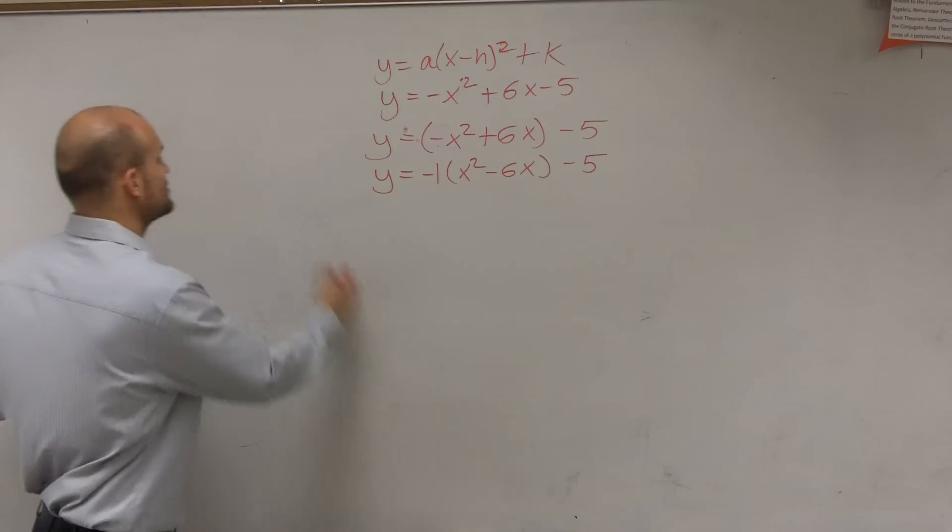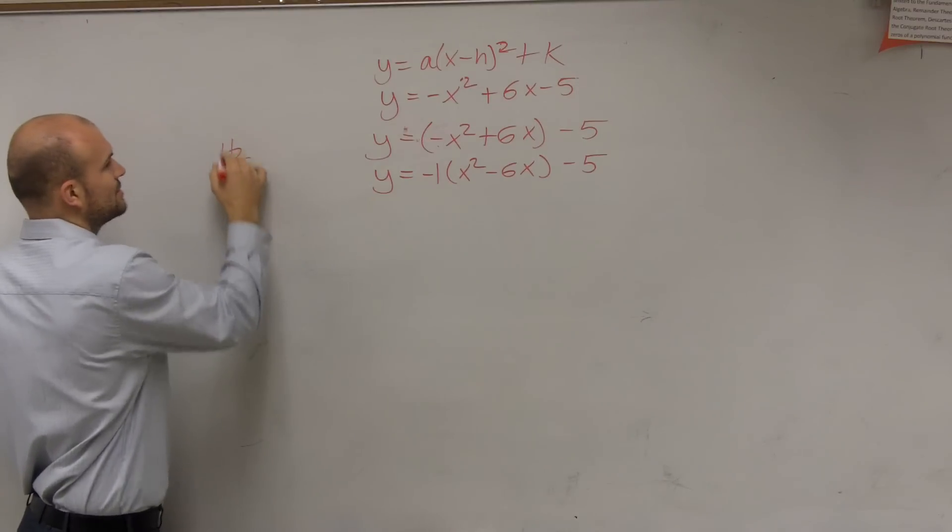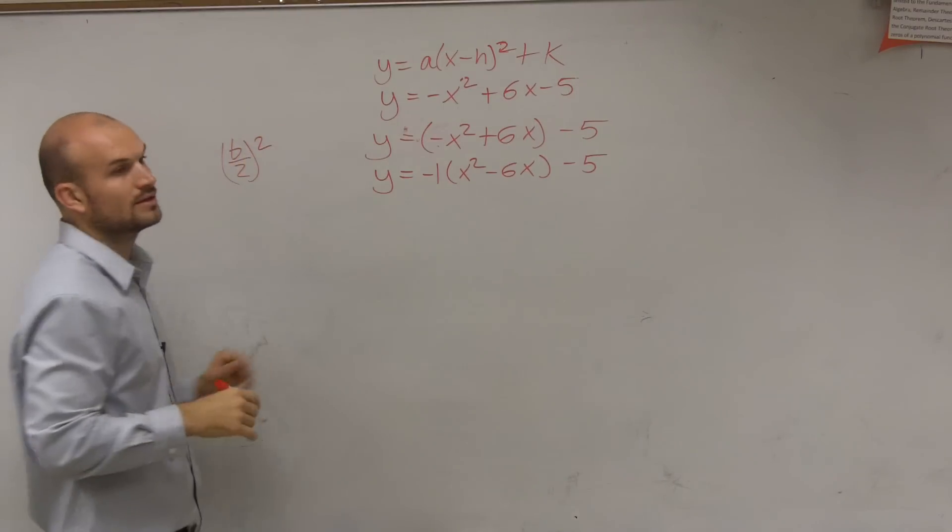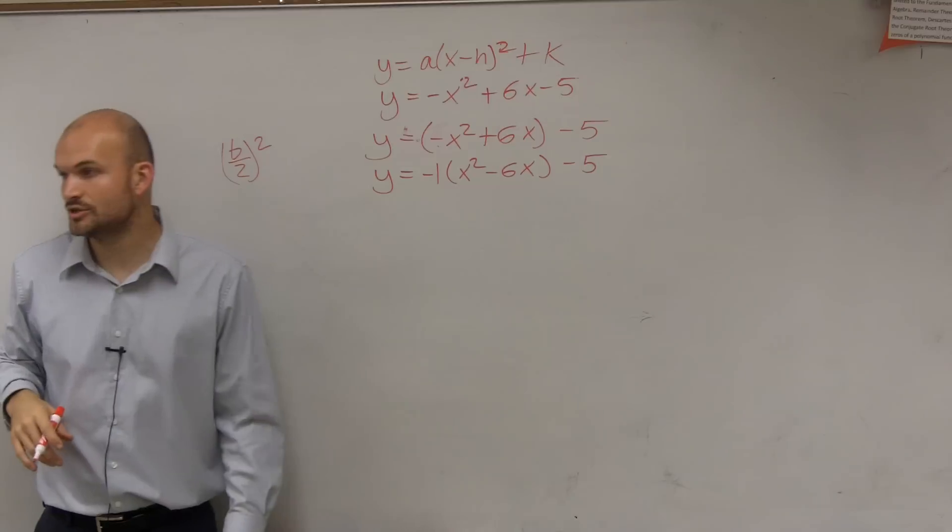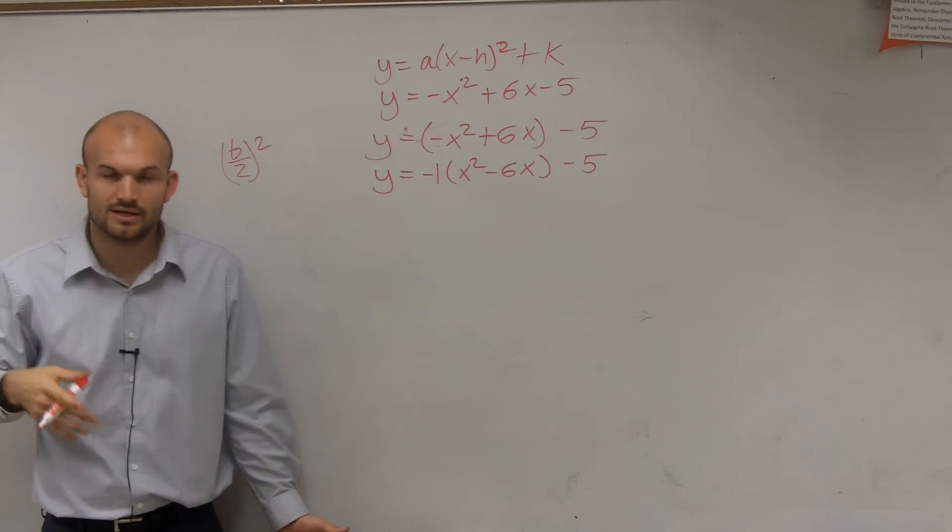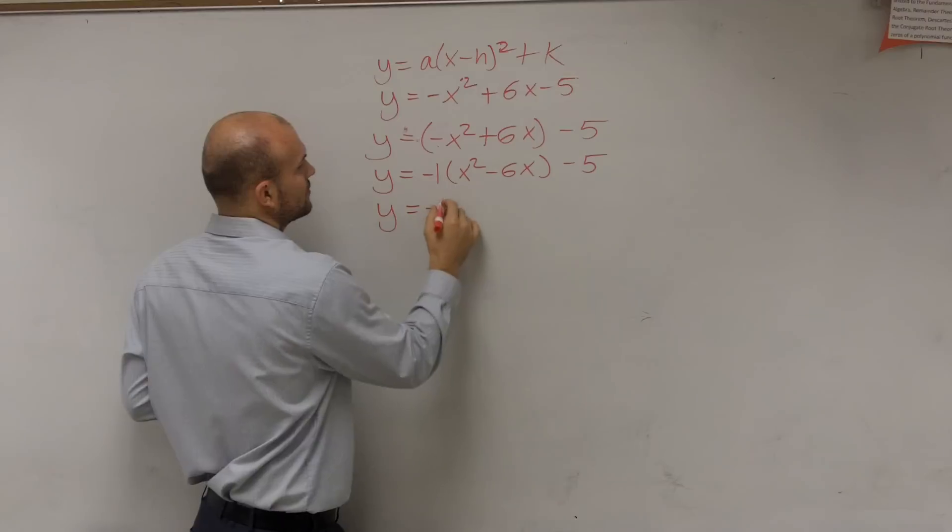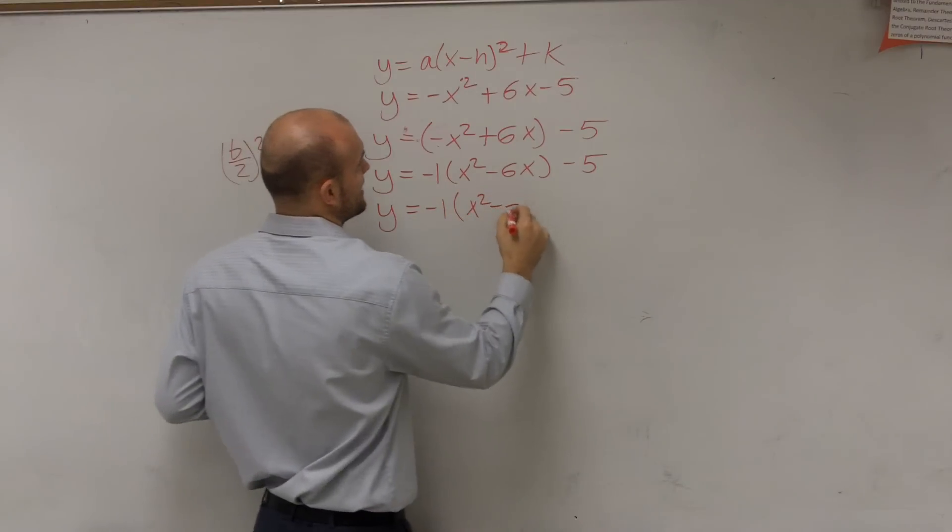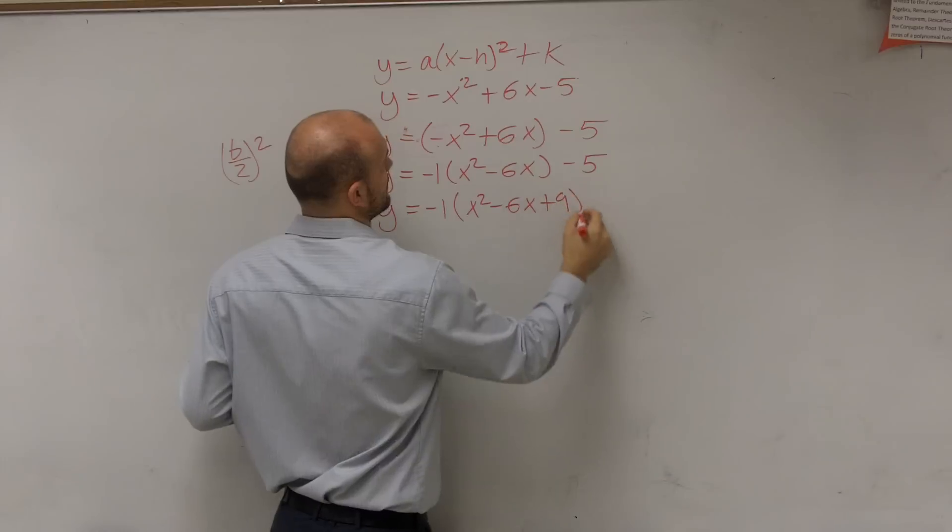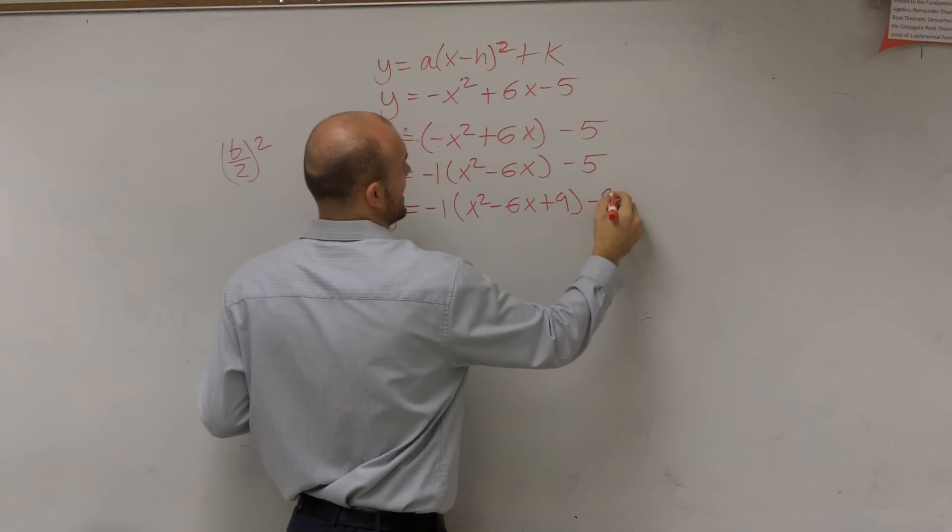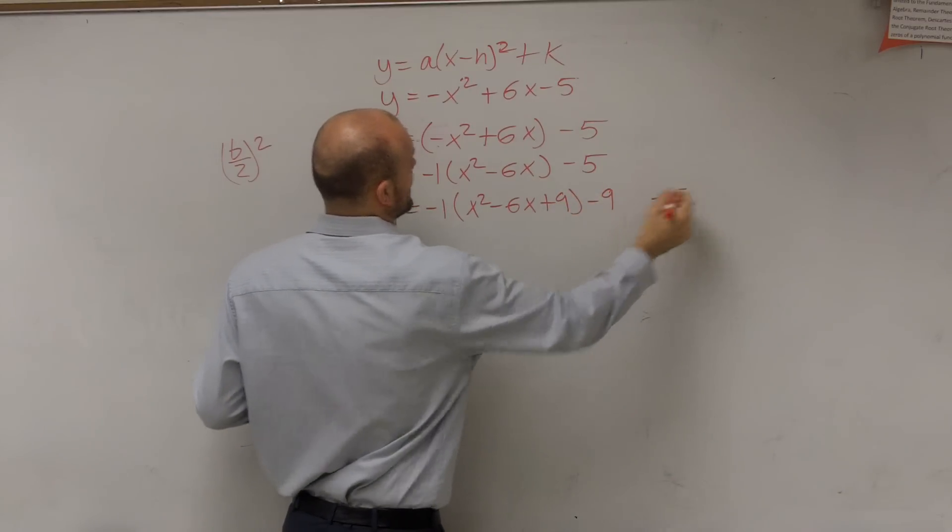So what we're going to do is we're just going to take your b divided by 2 and square it. So negative 6 divided by 2 is negative 3. Negative 3 squared is positive 9. So y equals negative 1 times x squared minus 6x plus 9 minus 9 minus 5.